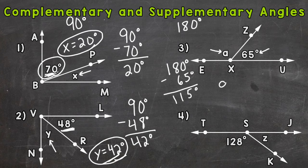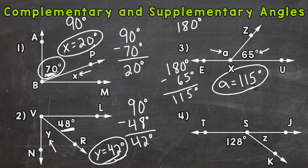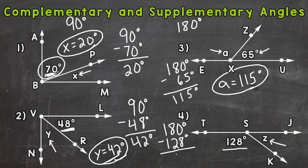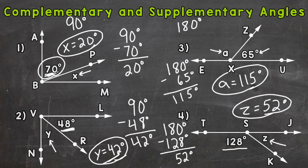180 minus 65 equals 115 degrees, so A equals 115 degrees. Let's double check: 115 degrees plus 65 degrees equals exactly 180 degrees, so that 115 and 65 degree angle are supplementary. For number four we're given 128 degrees and need to find what angle Z equals. These are supplementary angles so they have to equal 180 degrees. So 180 minus 128 equals 52 degrees — Z equals 52 degrees. And 52 plus 128 equals exactly 180, so they are supplementary.